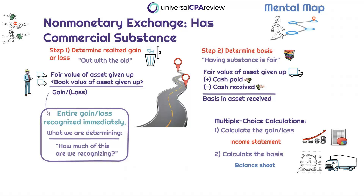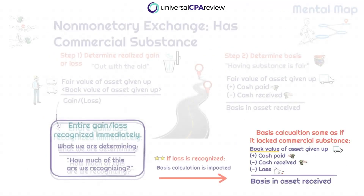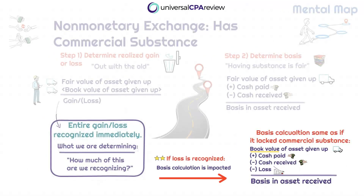Step one is calculating the gain or the loss — remember 'out with the old.' The gain or loss will be recognized in its entirety. Something to keep in mind: if we have a loss and the transaction lacks commercial substance, the basis is actually not going to apply the fair value approach. We're going to circle back to this scenario towards the end of this lecture, and it will all come full circle when we go through a few examples.